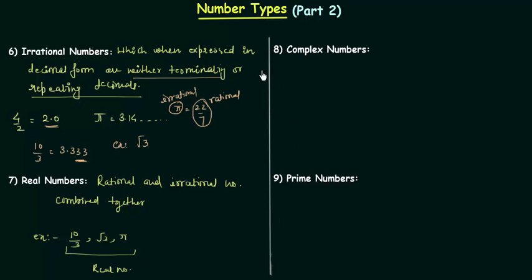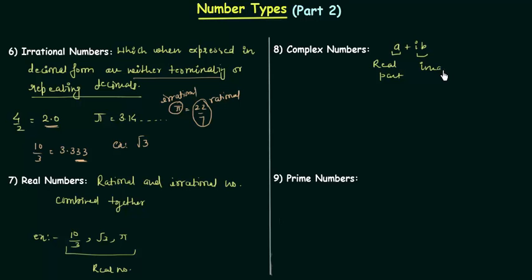Now we will move to the eighth type: complex numbers. A complex number is represented in the form of a plus ib, where a is the real part and ib is the imaginary part. Both a and b are real numbers.